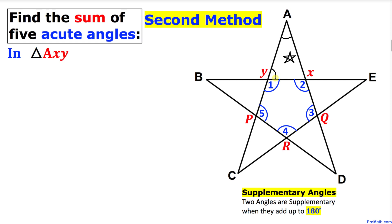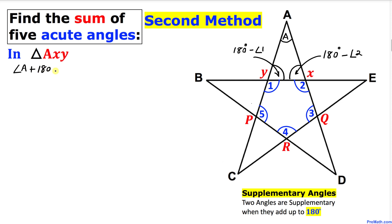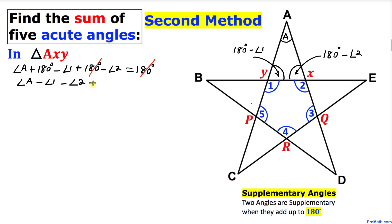Let's focus on triangle AXY. We know that angle A plus the other two angles must equal 180 degrees. Those two angles are supplementary to angles one and two, so they are 180 minus angle one and 180 minus angle two. Writing this out: angle A plus (180 minus angle one) plus (180 minus angle two) equals 180 degrees. Simplifying, we get: angle A minus angle one minus angle two plus 180 degrees equals zero. Let me call this equation number one.